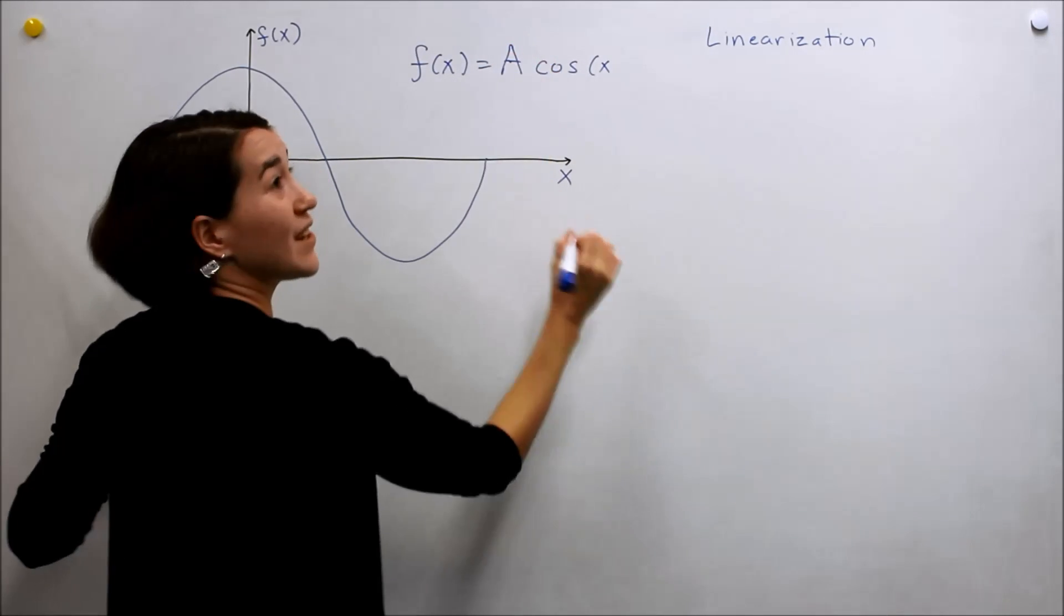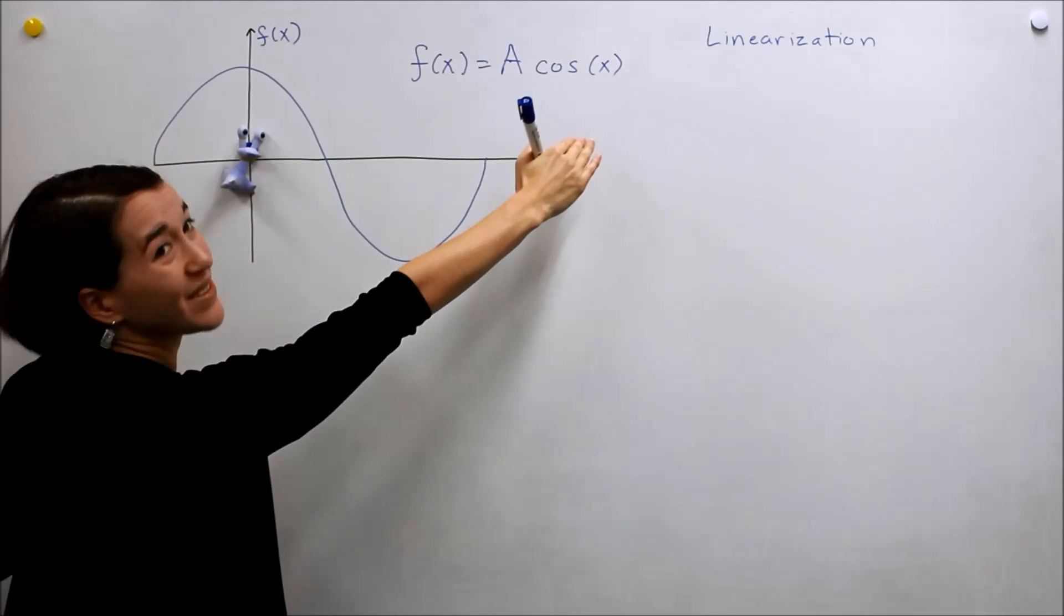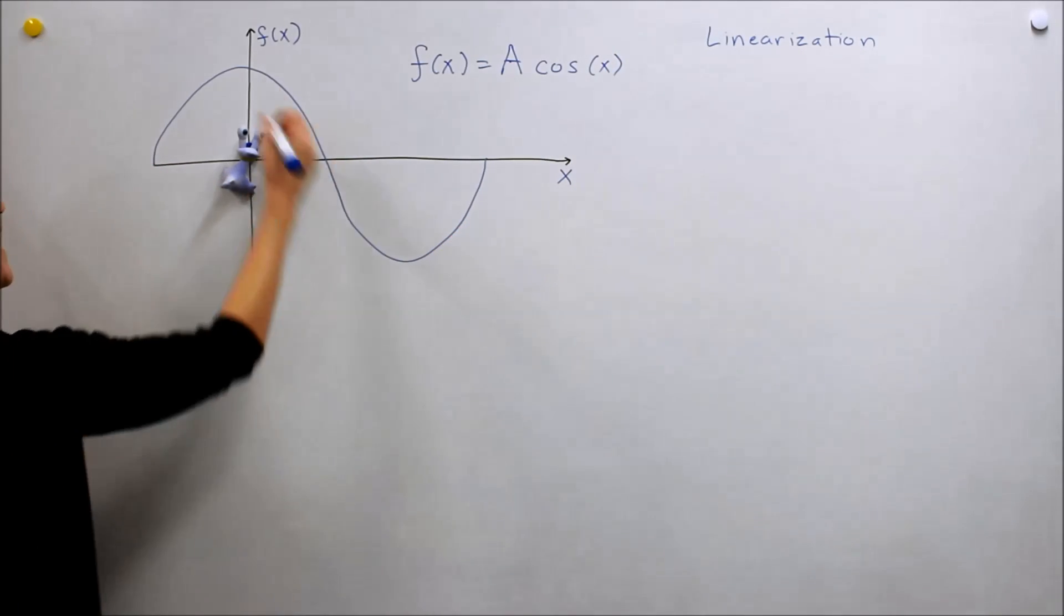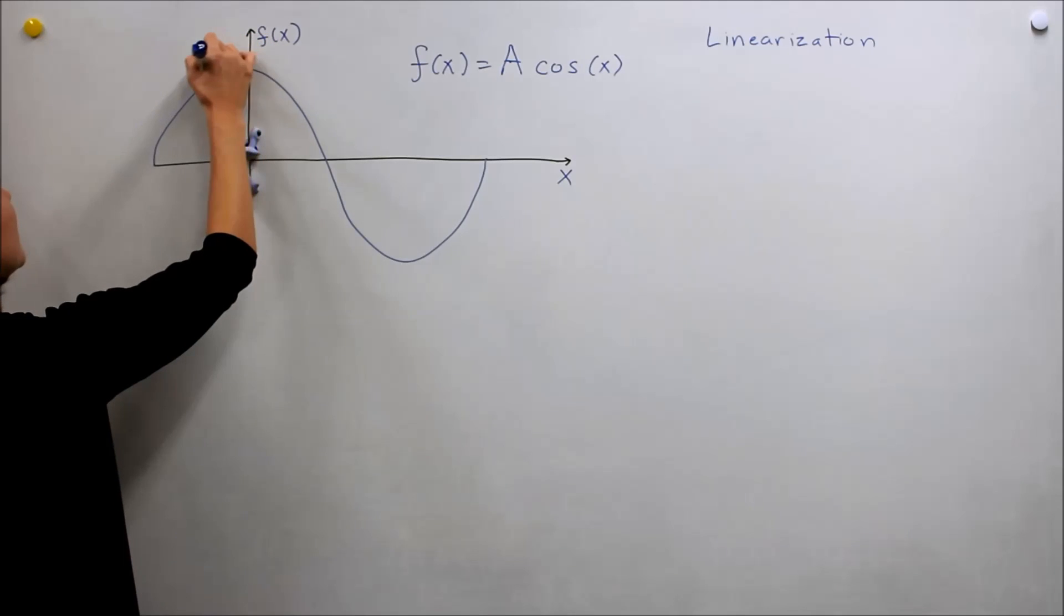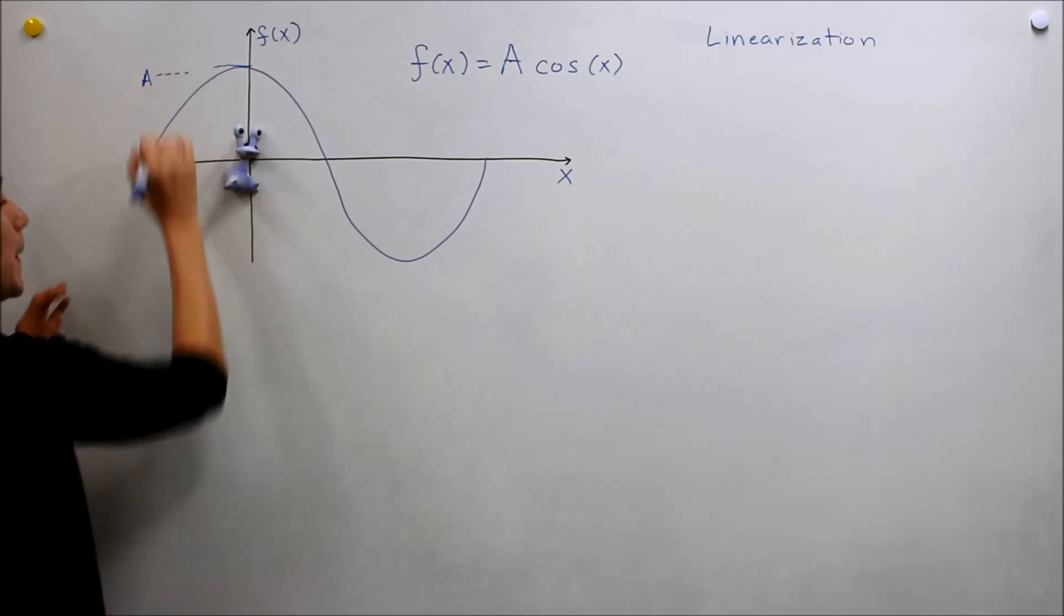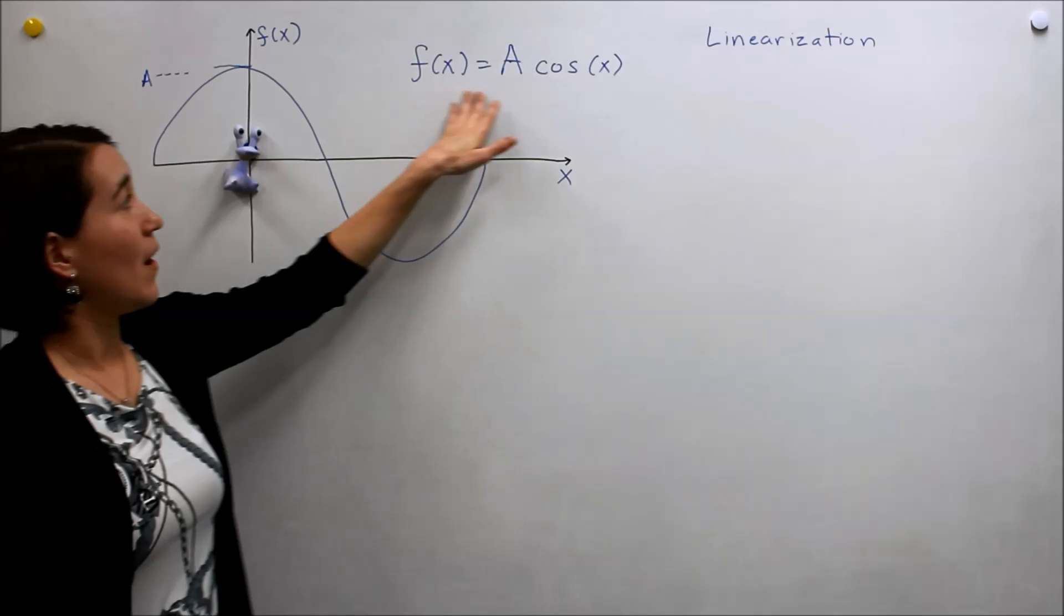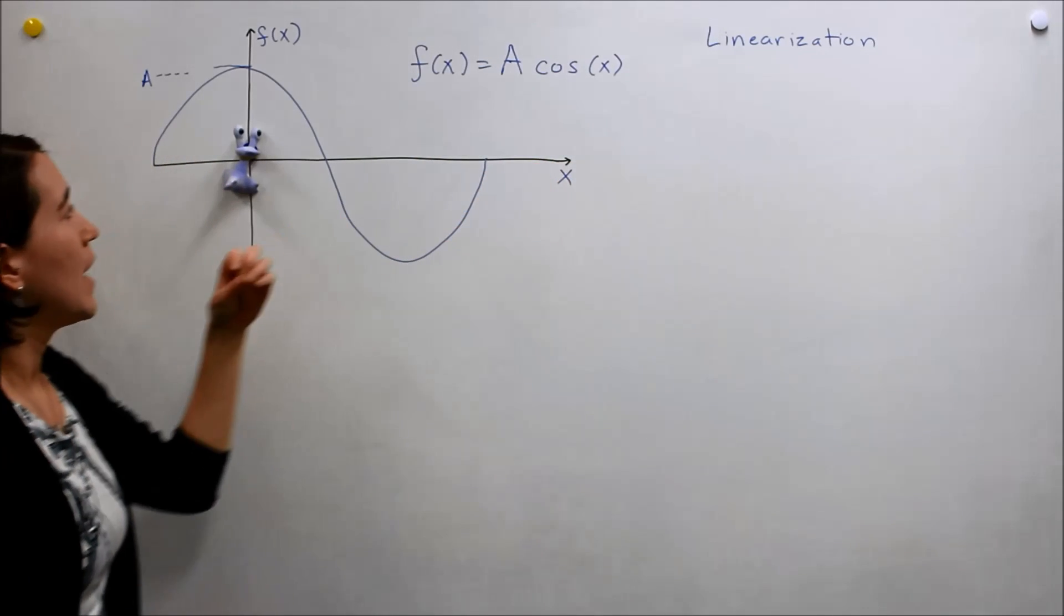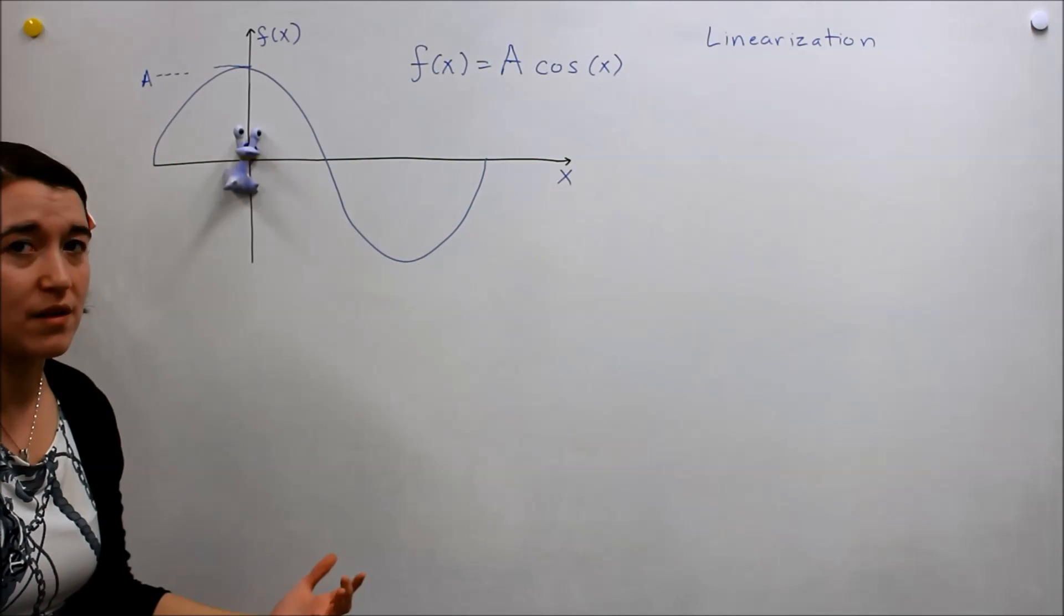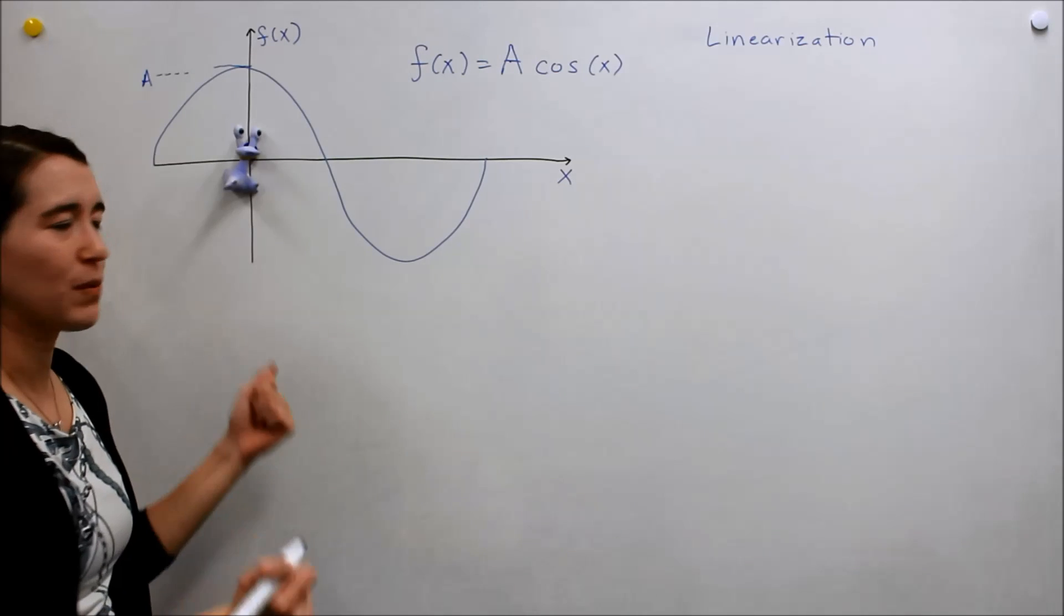So here's our non-linear equation and we're just going to say our amplitude here is A. So there's our non-linear function and we want to linearize it, but where? Well we have to pick that. So we will pick this point.